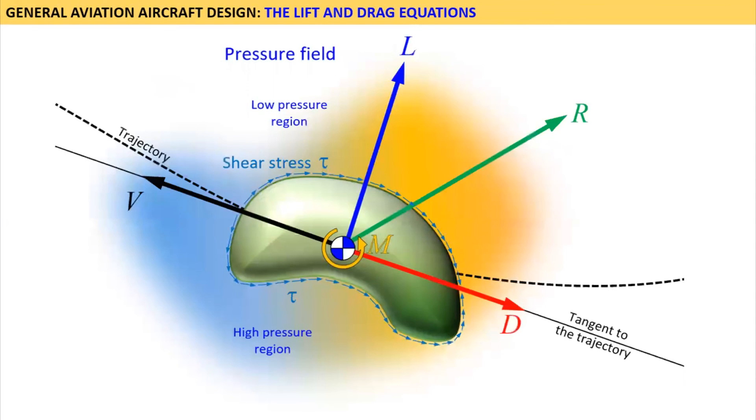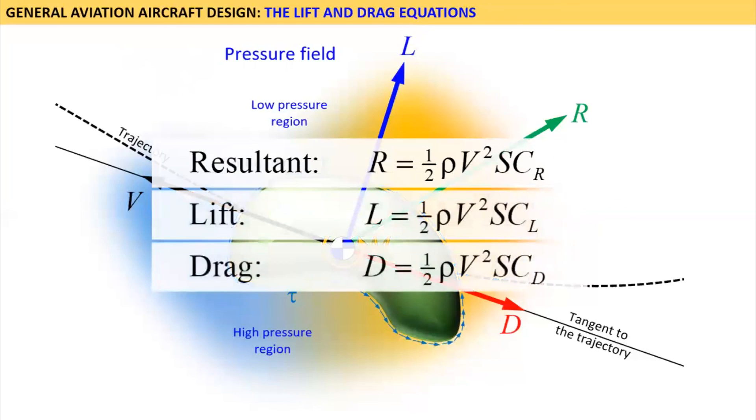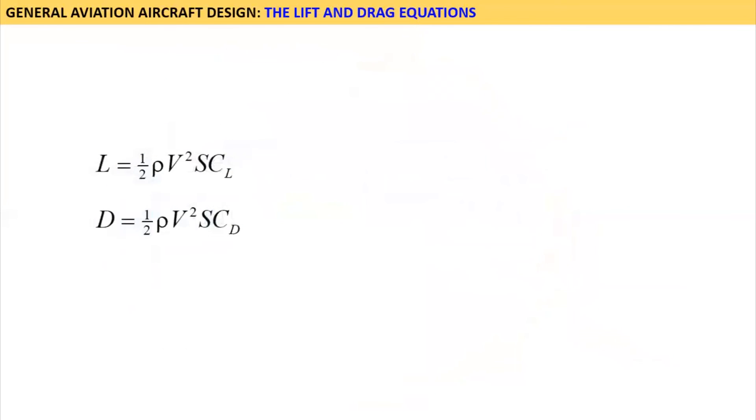We can now write the aerodynamic force R, as shown here, using the dimensionless coefficient C sub R. It is the function that depends on the orientation of the body and the fluid. We can also write similar expressions for the lift and drag, using the lift coefficient C sub L and drag coefficient C sub D. For those specifically, the dependency of the angle of attack alpha can be written as shown, at least in the linear region of the lift curve, and using the adjusted drag model.